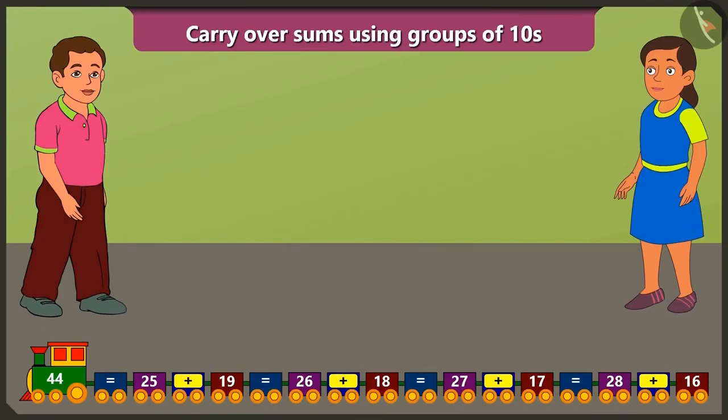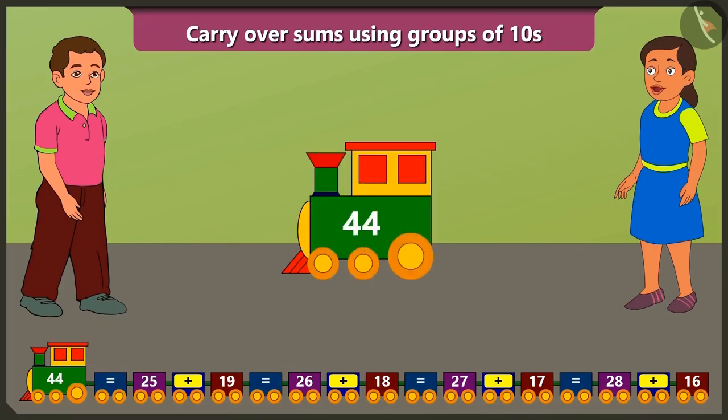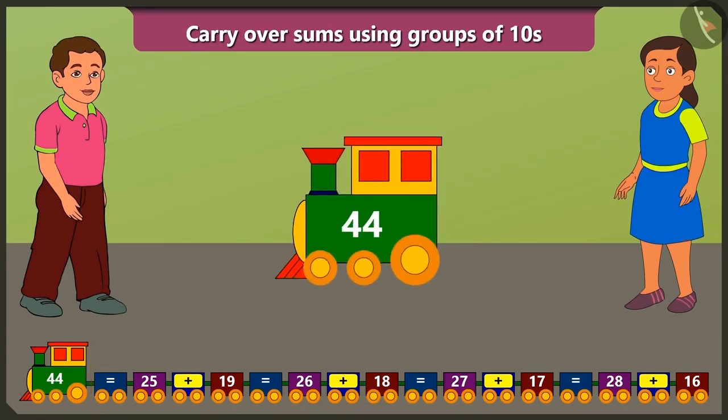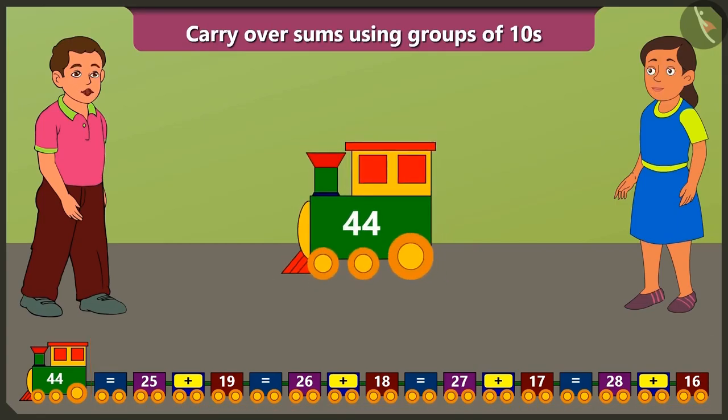Look Bubbly, what a fun train I have. Hey, but why is 44 written on the engine of your train? Why? Because the sum of all the numbers written on the compartment of the train equals to 44. How? Let me explain.